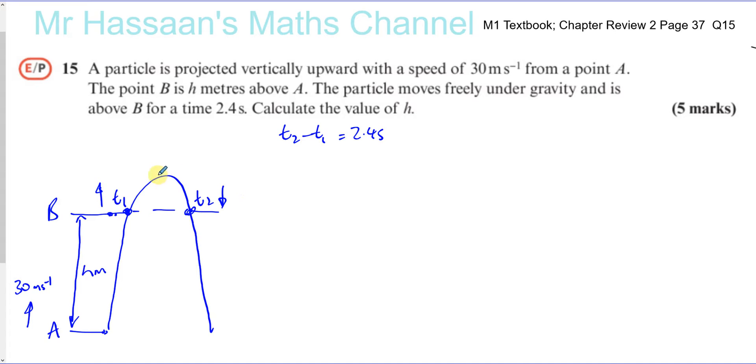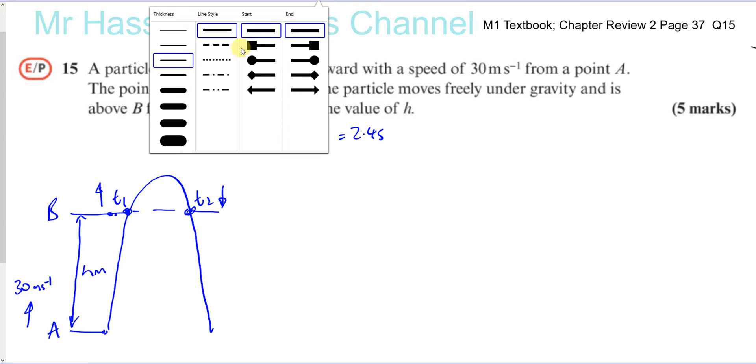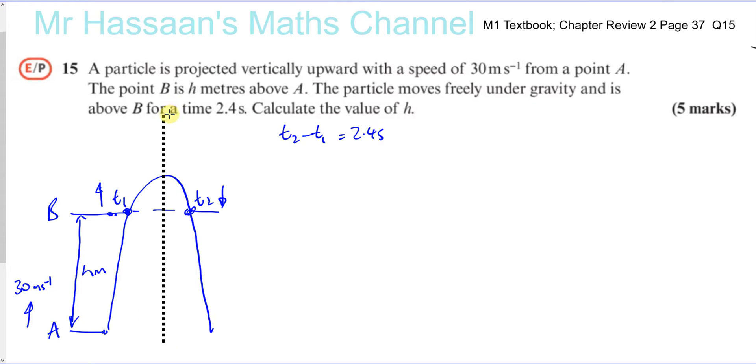One method we could use is by thinking about the halfway point. If we think about the time it takes for it to reach its highest point, which is up here somewhere, where the velocity is going to be zero, the speed is going to be zero at that point. So let's do that first. Let's find how long it takes to reach its highest point.